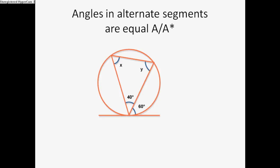It being the angle. X would be 60 in this case. Alternate segments. And if you needed to work out why, then you could use the angles in the triangle. As I mentioned earlier, add up to 180 degrees.